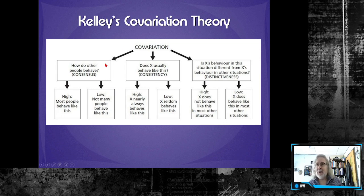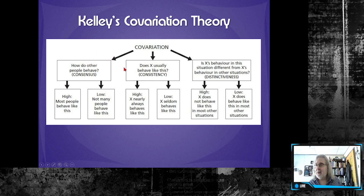Let's look at covariation. Kelly was trying to argue that people act like scientists — they're trying to figure out a reason why a behavior happens. That makes sense because that is what we're doing with attributions. Kelly argues there are three covariations, or think of them as three factors that come into play when you make an attribution.